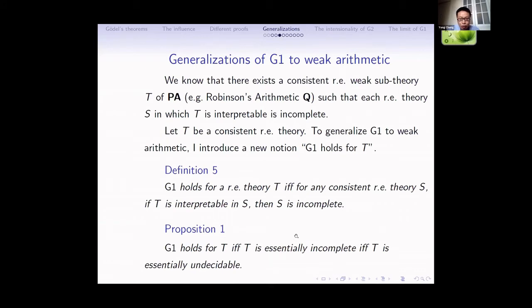Now I will talk about the generalization of G1 to weak arithmetic. We know that there exists a consistent RE weak sub-theory of PA — for example, Robinson arithmetic Q — such that for any RE theory S, if Q is interpretable in S, then S is incomplete. Based on this fact, I want to generalize G1 to weak arithmetic. I introduce the notion: G1 holds for T means that for any consistent RE theory S, if T is interpretable in S, then S is incomplete. An important fact is that G1 holds for T if and only if T is essentially incomplete and essentially undecidable — meaning any consistent RE extension of T is undecidable.